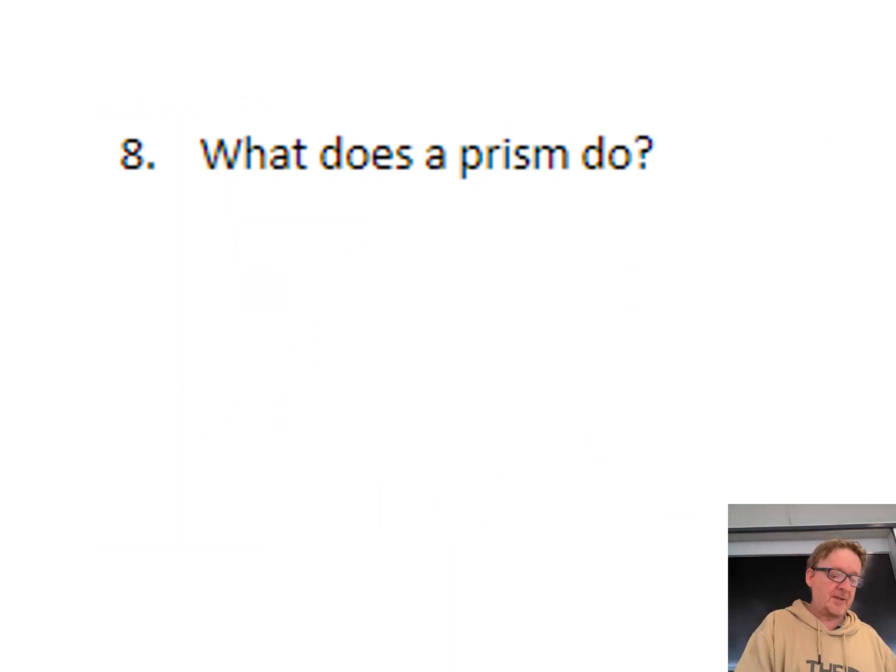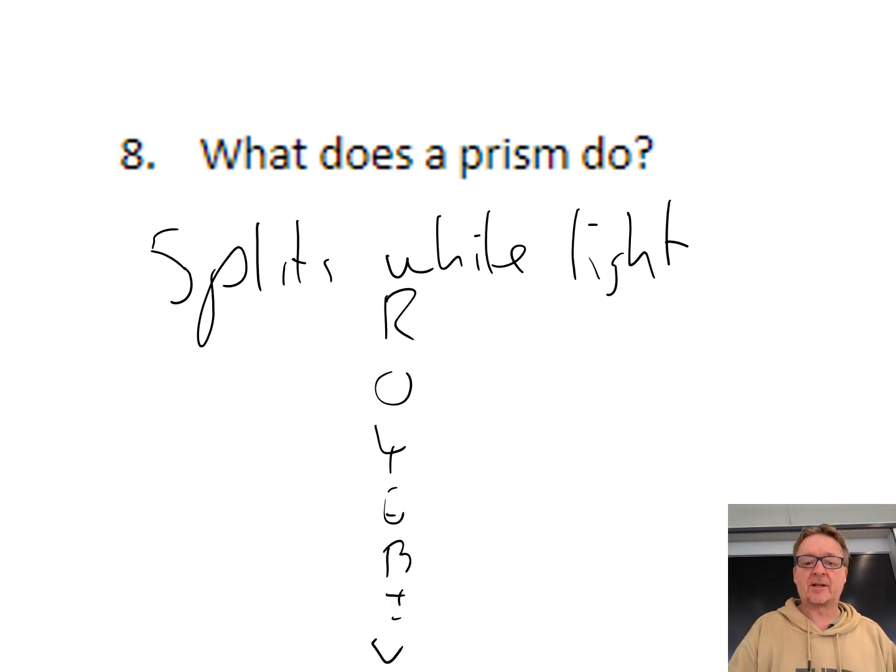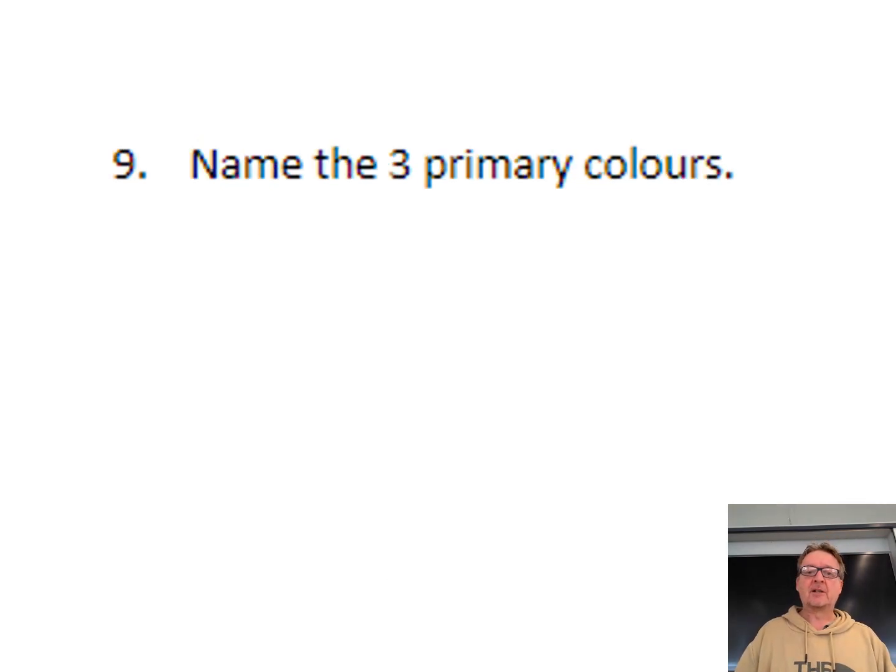What does a prism do? A prism splits white light: red, orange, yellow, green, blue, indigo, violet. So that's white light. Richard of York gave battle in vain. Roy G Biv.